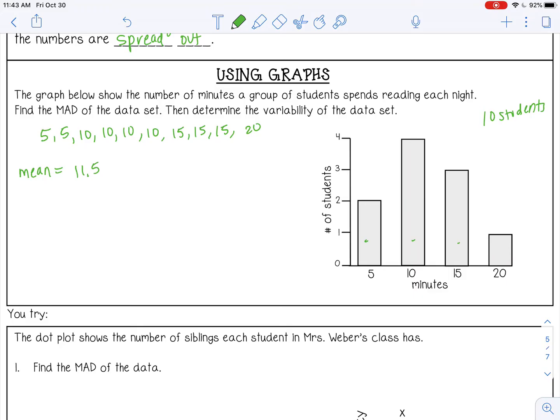Next, we're going to take 11.5 and subtract it from all of the numbers in the data set. 11.5 minus 10 is 1.5. Now, there's three 10s, so I'm just going to list 1.5 three times. 11.5 minus 15, that's negative 3.5. There's three of those, so I'm going to list that three times. And 11.5 minus 20, that's negative 8.5.